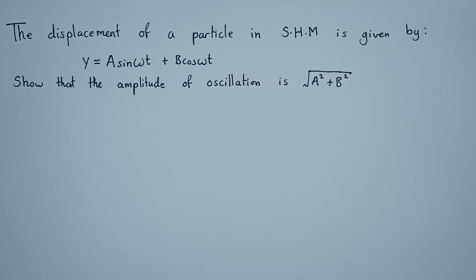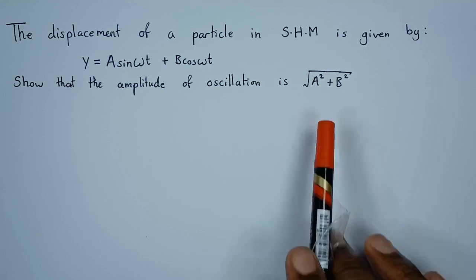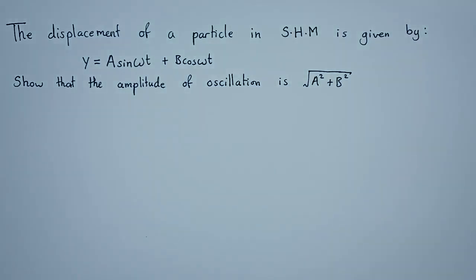Hello everyone. We have this question on simple harmonic motion which reads: the displacement of a particle in simple harmonic motion is given by y = a·sin(ωt) + b·cos(ωt). We need to show that the amplitude of oscillation is given by a specific expression.